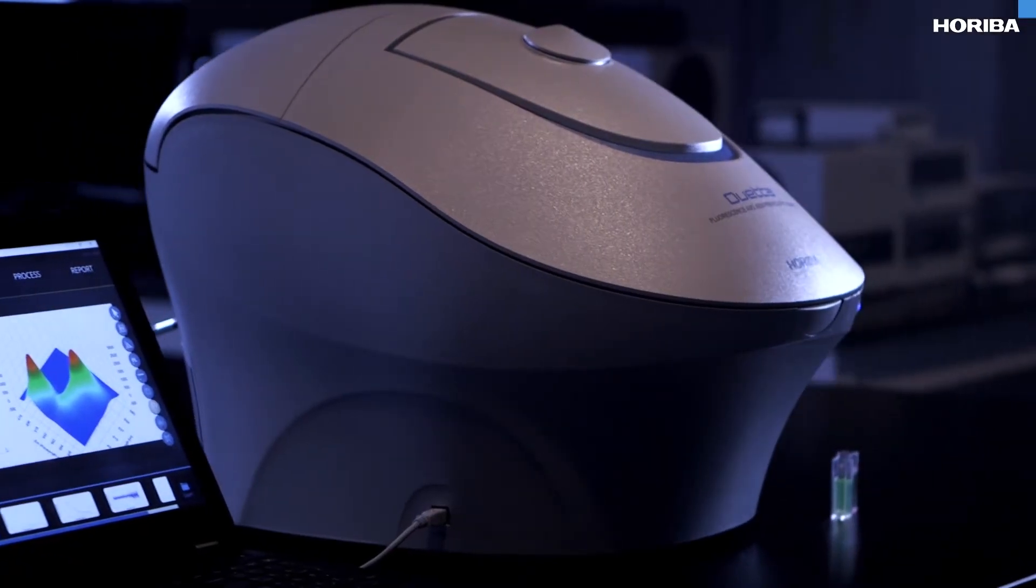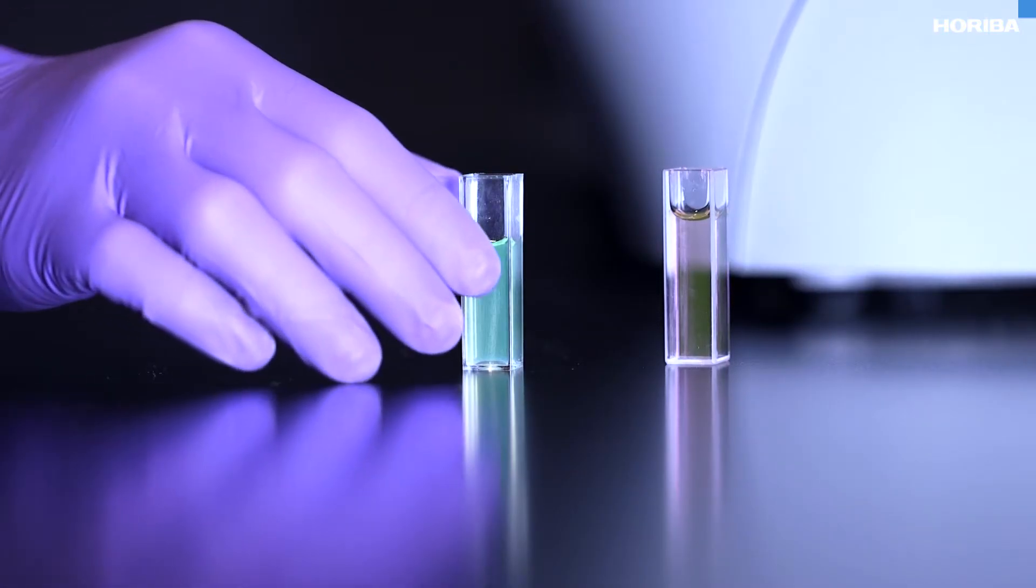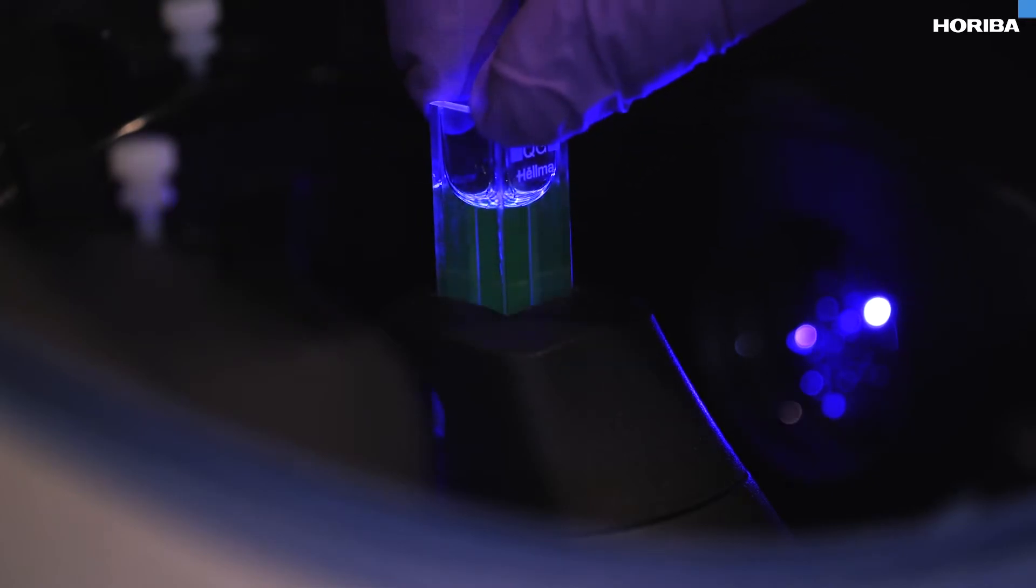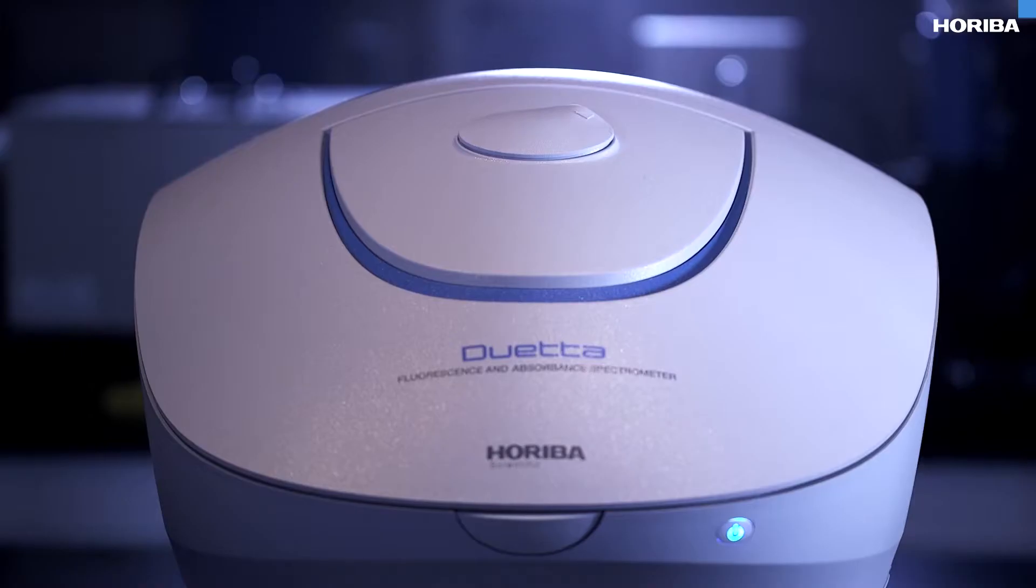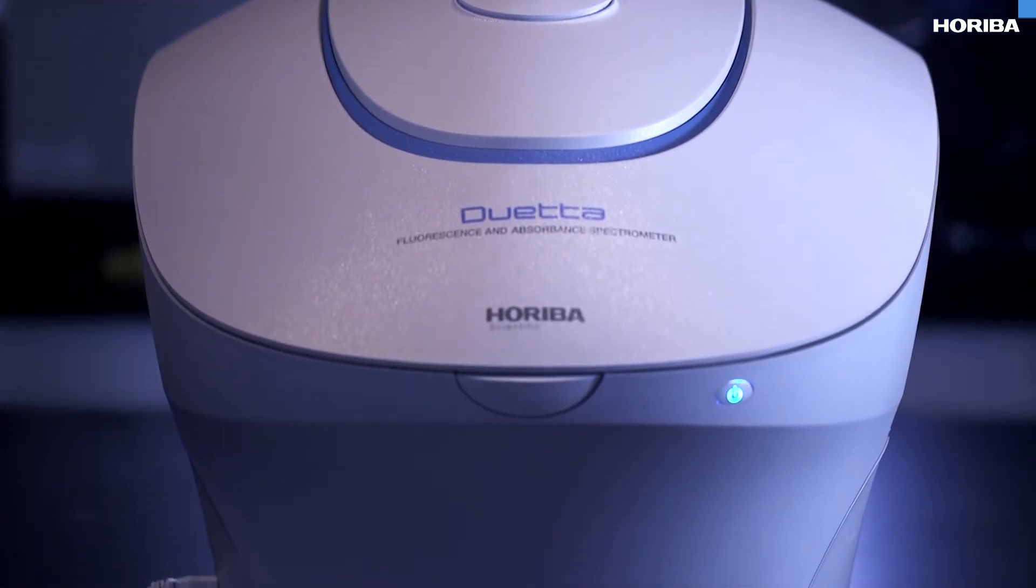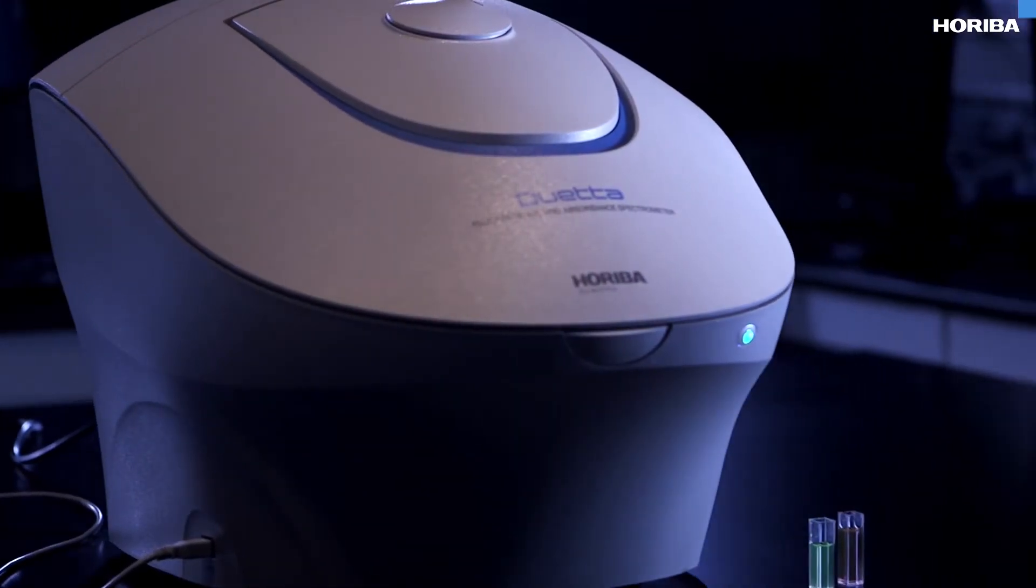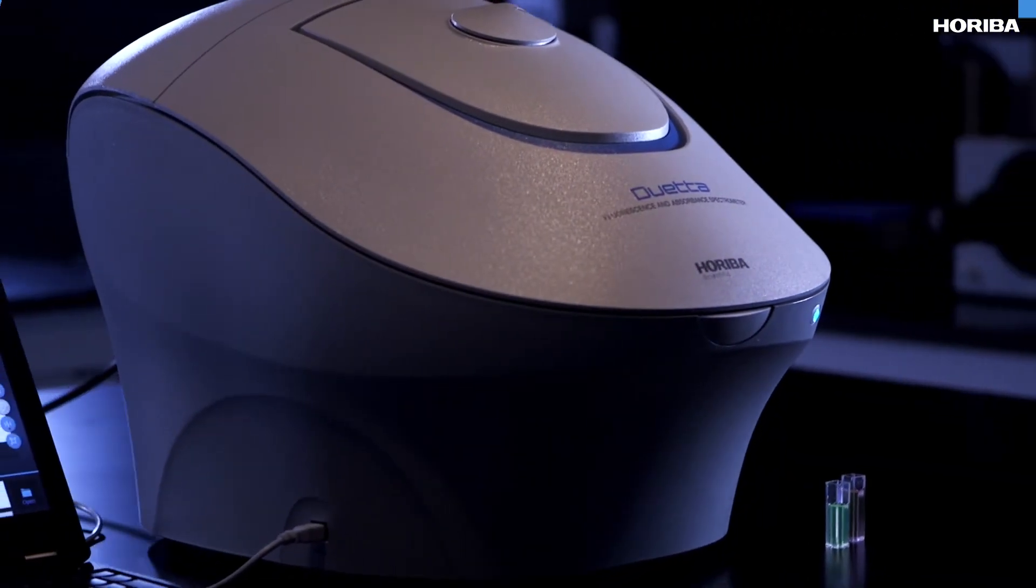The Duetta has transformed fluorescence spectroscopy. It is the fastest system available, combines fluorescence and absorbance spectroscopy for the most accurate data, and offers an extended spectral range for more flexibility. The Duetta is the future of fluorescence. Now!